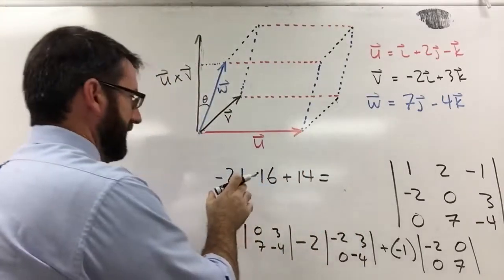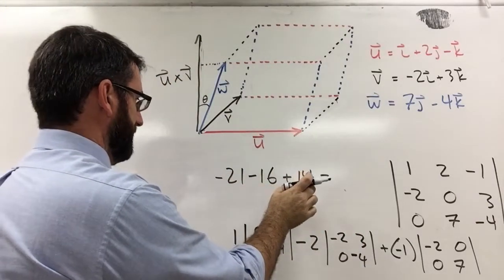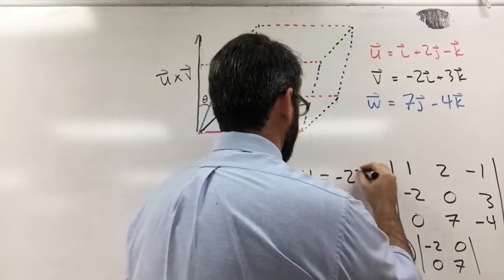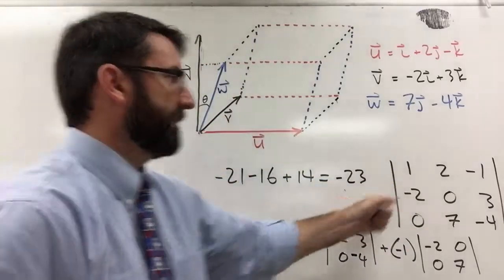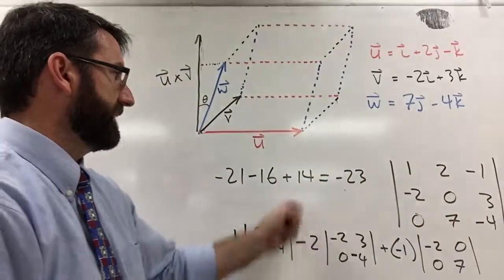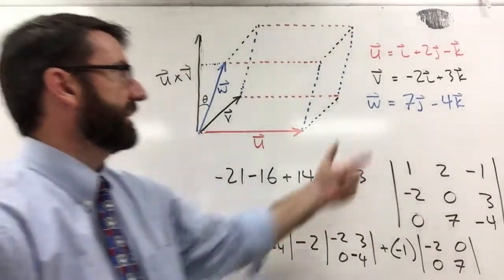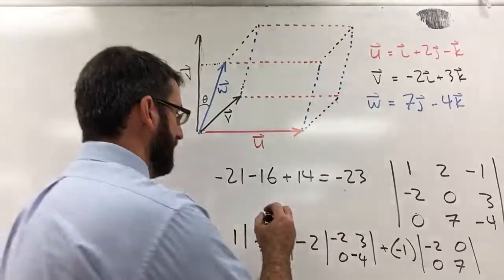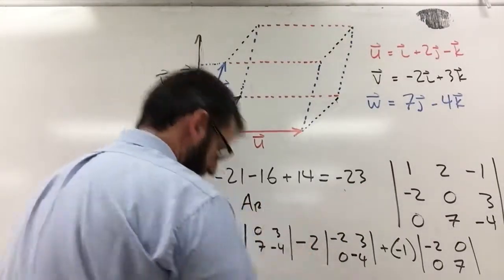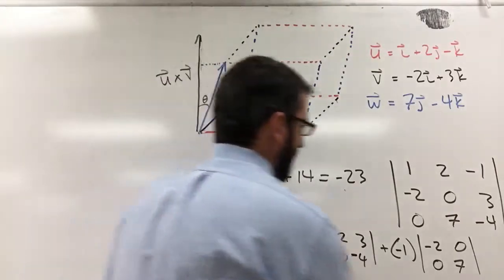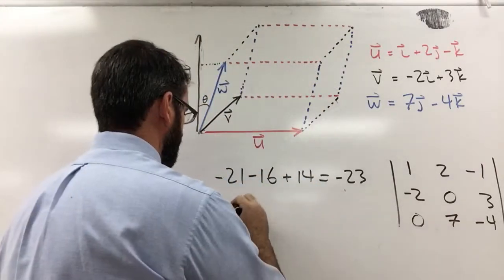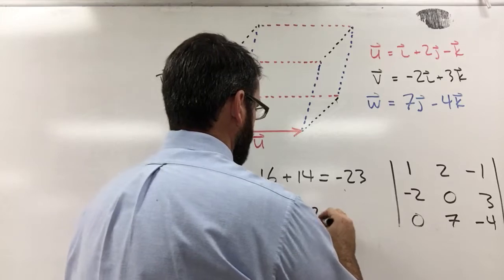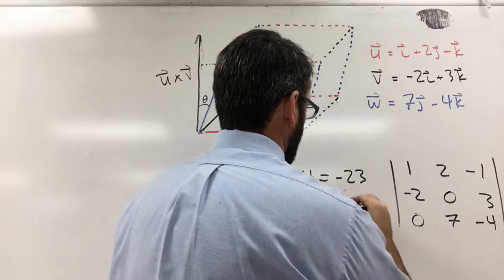And if we add those all up: negative 21 plus 14 is negative 7, minus 16 is negative 23. So the determinant of this matrix is negative 23 — that's the triple scalar product of these vectors. The volume of this parallelepiped is equal to the absolute value of negative 23, which is 23.